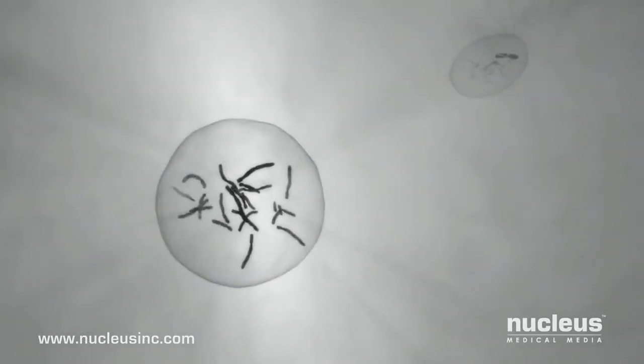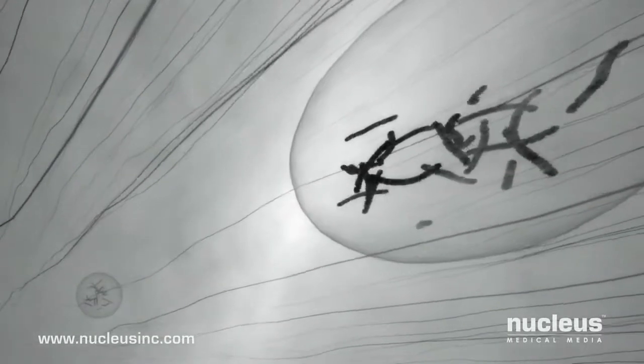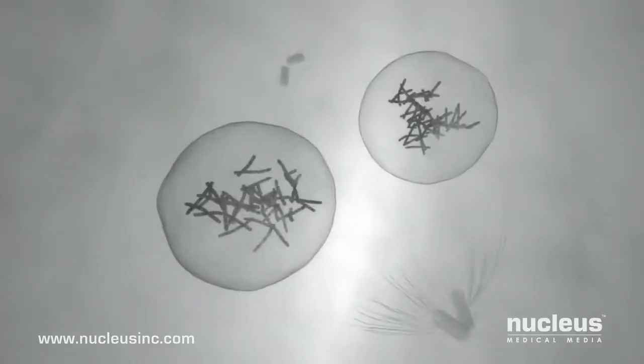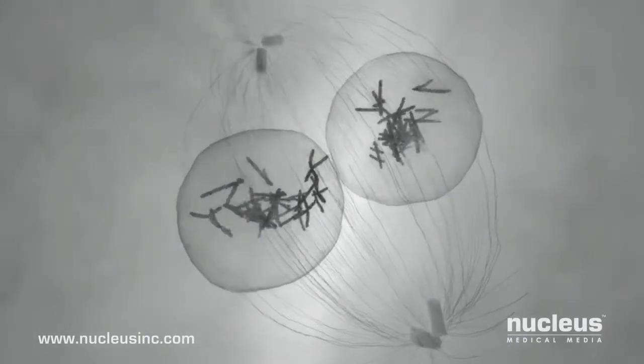As the male and female pronuclei form, spiderweb-like threads called microtubules pull them toward each other. The two sets of chromosomes join together, completing the process of fertilization.